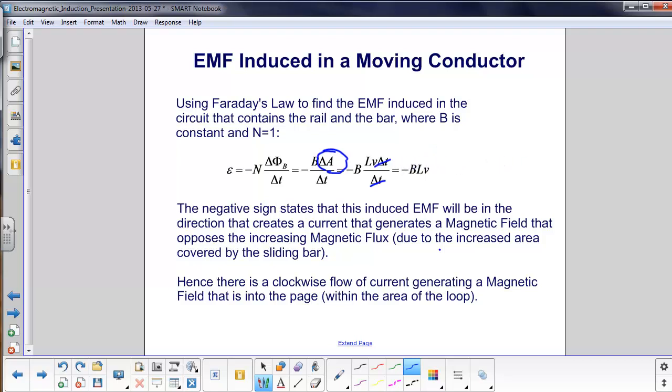The negative sign states that the induced EMF will be in a direction that creates a current that generates a magnetic field that opposes the increasing magnetic flux. So if you remember from the previous slide, the flux was coming out of the board. So here's our little current here, our little circuit loop. Here's the bar that's moving to the right. So if this is increasing, which it is, we need a current that will oppose that increase.